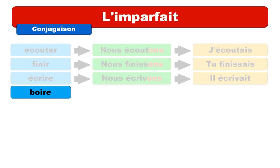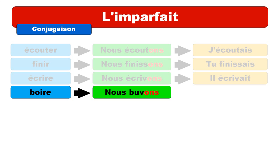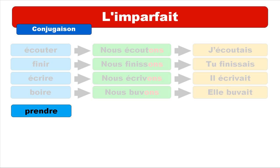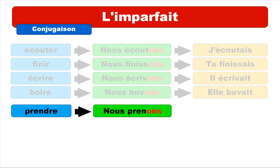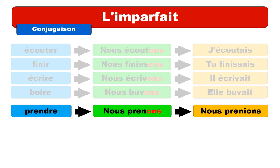Then boire — at the present form for nous it's 'nous buvons'. Same procedure: for 'elle', using the same ending as 'il', we get 'elle buvait'. Then prendre — for nous at the present it's 'nous prenons'. We take away the ending and combine it with the imparfait ending, and we get 'nous prenions'.